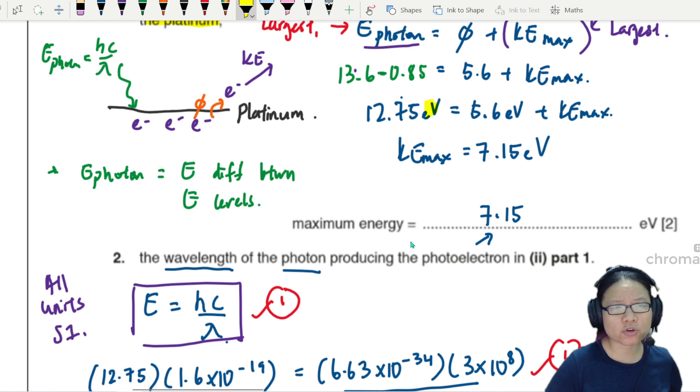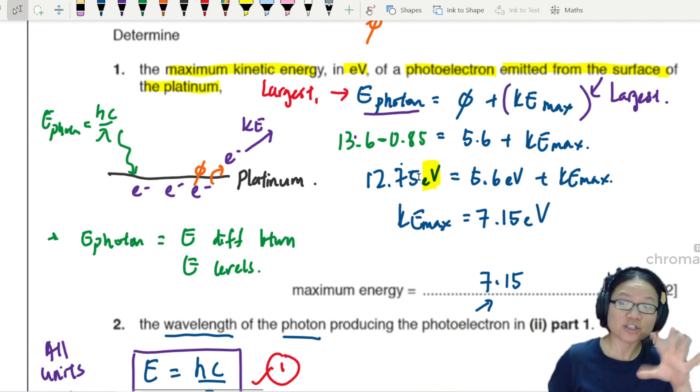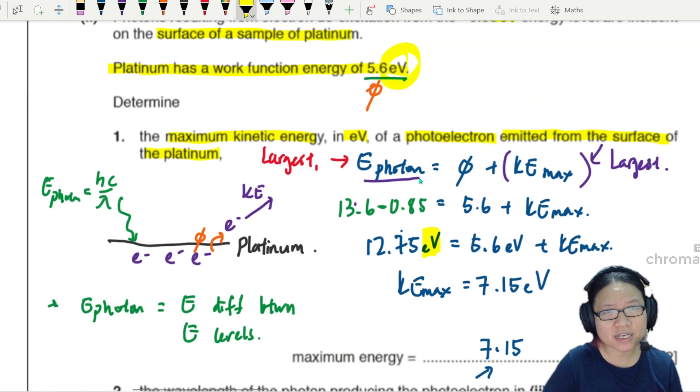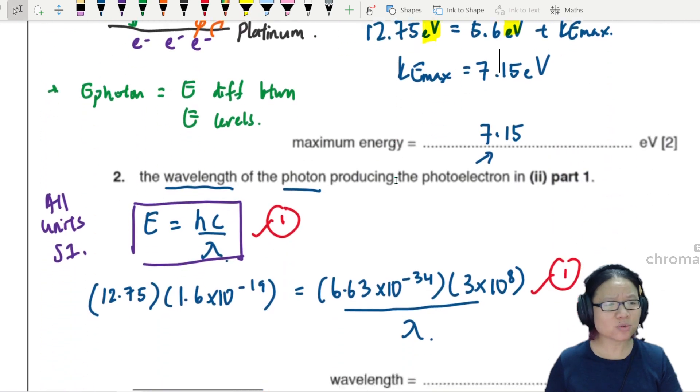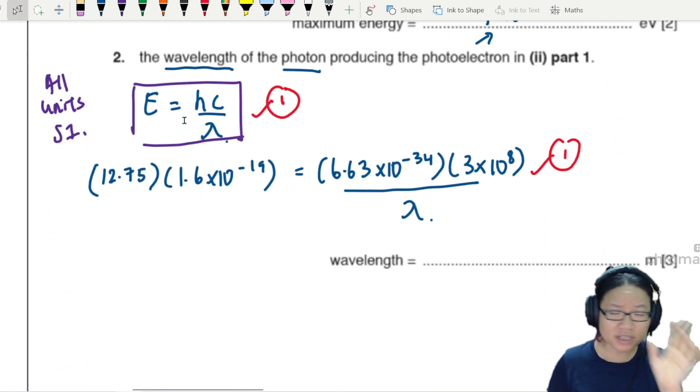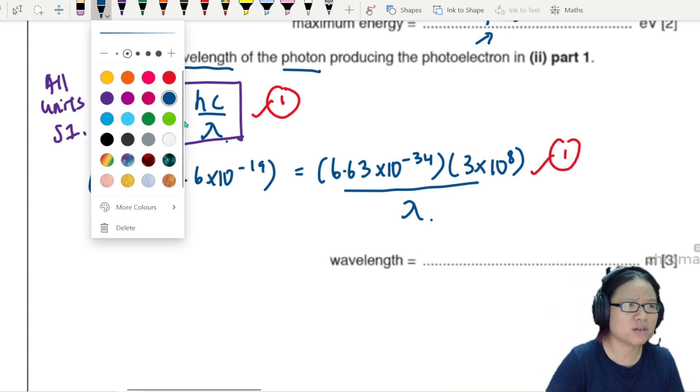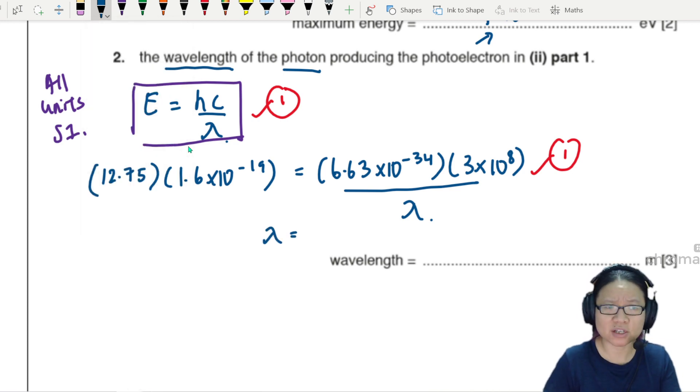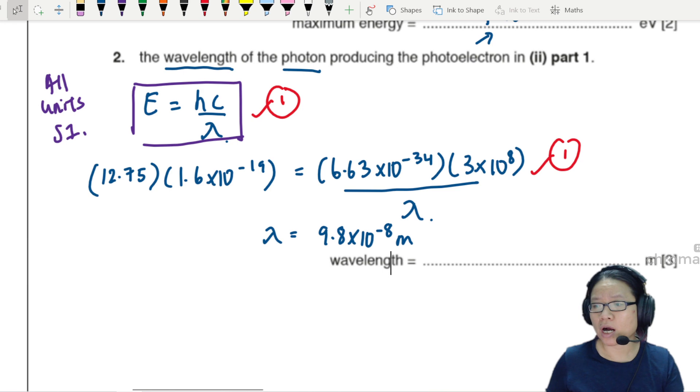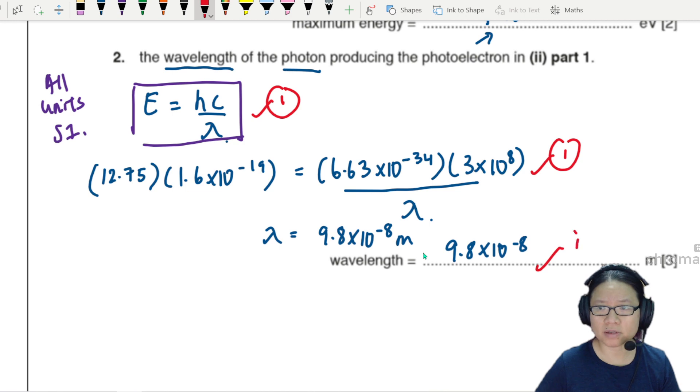So I'm going to take 12.75 times 1.6×10^-19, that's the conversion. h is 6.63×10^-34, c is the speed of light 3×10^8, and we're seeking wavelength. This is 3 marks: equation one mark, substitution making sure everything is correct one mark. So you press calculator? 9.8×10^-8 meters. You can be fancy and convert to nano but I don't see a point, so I'm just going to write the prefix and call it a day. The final answer would be the final third mark - two calculation marks and one answer mark.